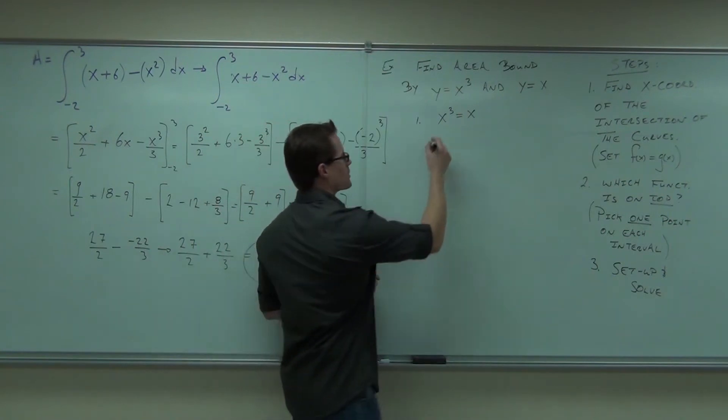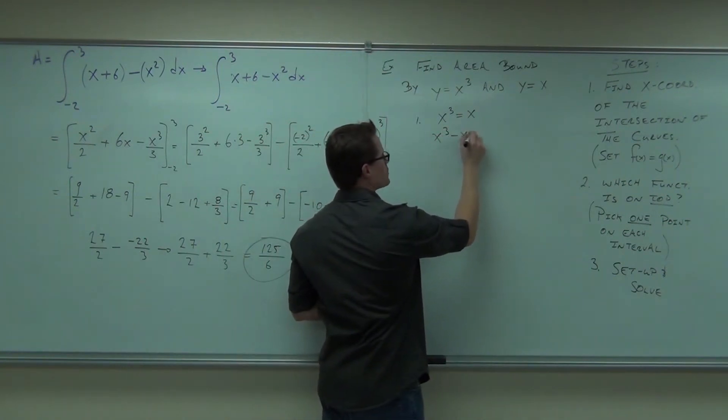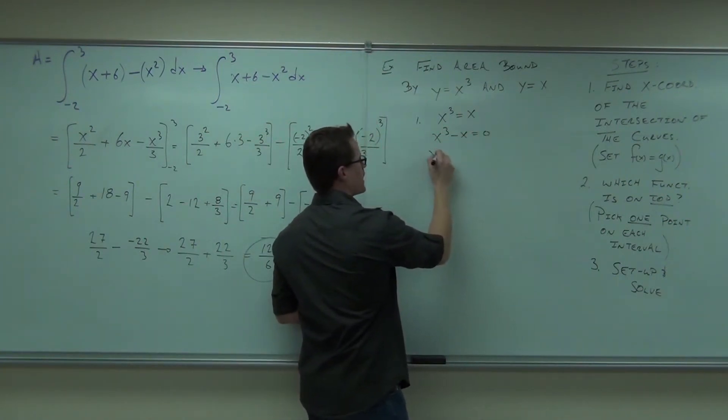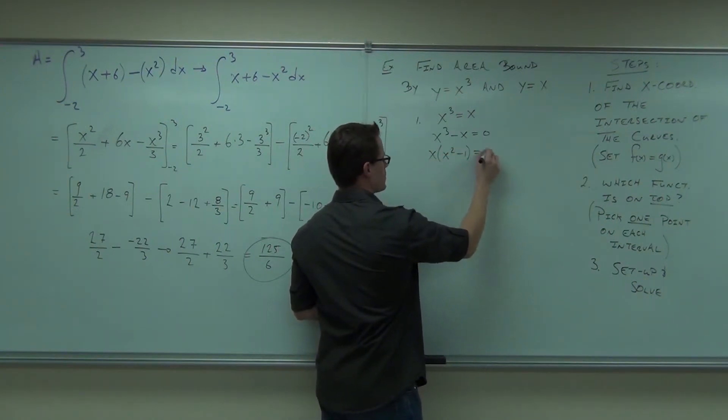Solve it by subtracting the x. You're going to get x cubed minus x equals zero. Factor it, of course. You're going to get x times x squared minus one. Keep going.